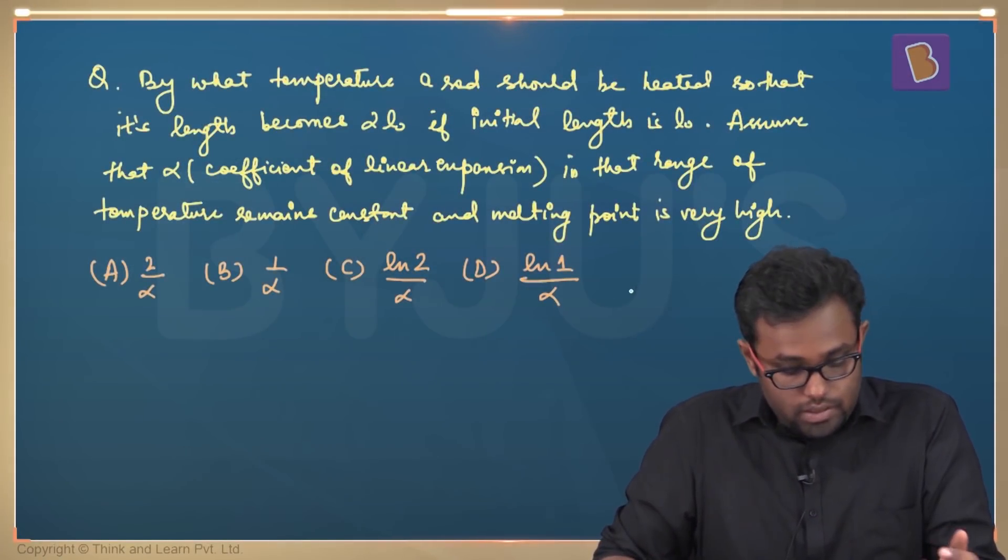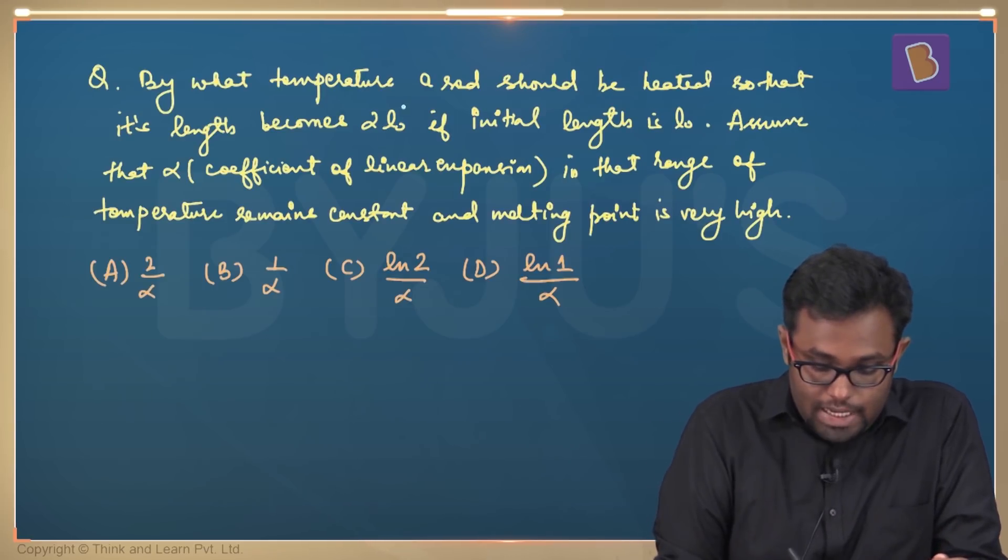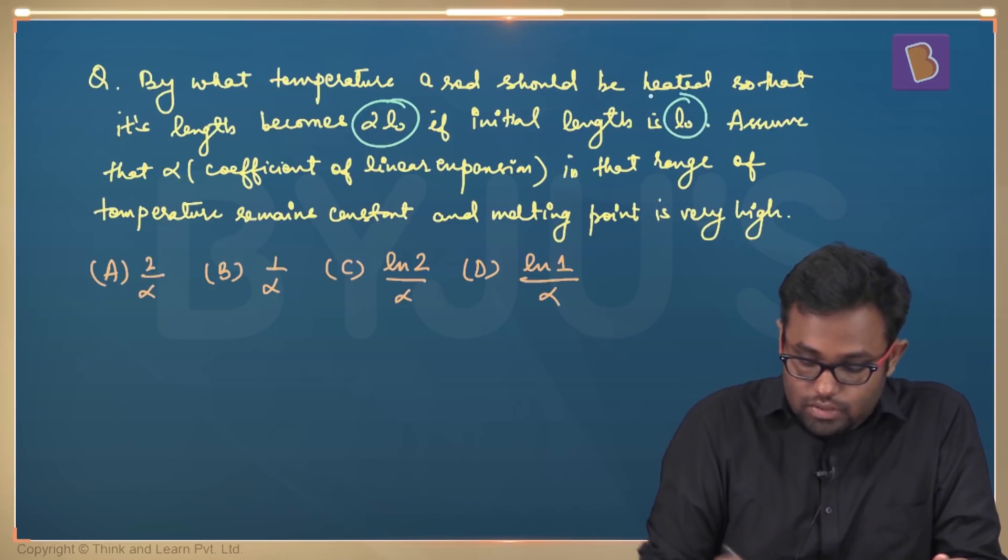By what temperature a rod should be heated so that its length becomes two times of L0 if initial length is L0? The length becomes two times of L0 if the initial length was L0.